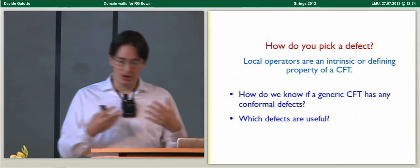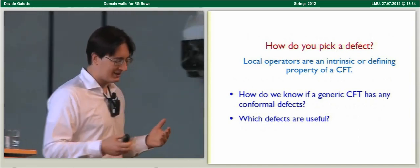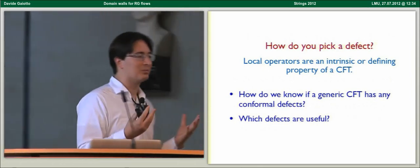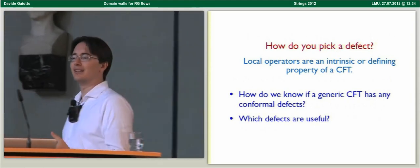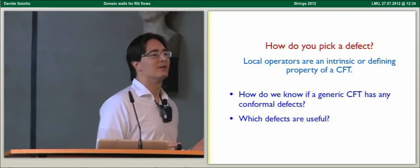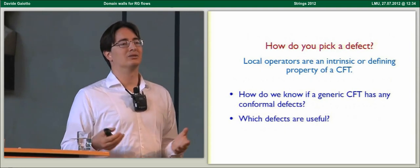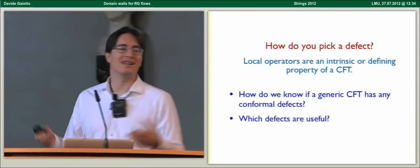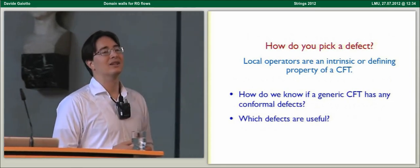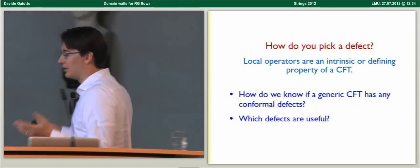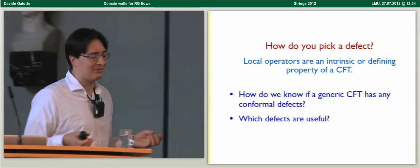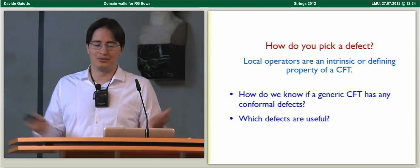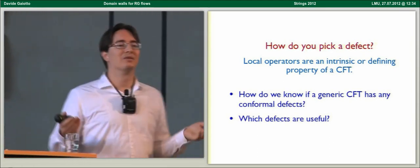There is an obstacle in this approach: while with local operators we are familiar — we have the idea that local operators are an intrinsic property of the conformal field theory, always there, always available to study it — for extended defects the situation is a bit murkier. If you want to study local operators, you can always use the state-operator map, knowing that there are as many operators as states on the sphere. But if you are trying to study an extended defect, that's less obvious.